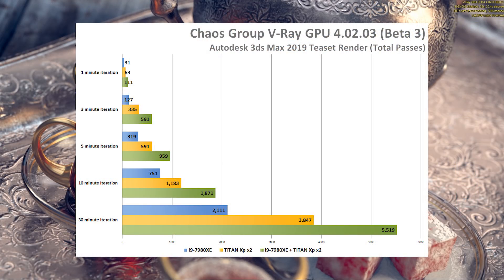CPUs seem slow for rendering unless you're looking at one like the 7980XE. In some cases, that chip contributes as much as one of the Titan XPs, and perhaps even more if you look at the 30-minute iteration, where the single CPU contributed more than the two GPUs split down the middle. That's impressive. Granted, the 7980XE is a $2,000 CPU, but it's clearly very powerful.